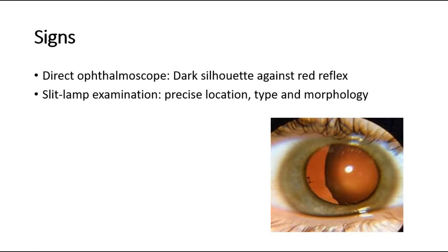For the signs of cataract, if seen on direct ophthalmoscope, we can see a dark silhouette against the red reflex. This picture shows a blackish shadow which is the cataract. On slit lamp examination, we can detect the precise location, the type of cataract, and also the morphology.